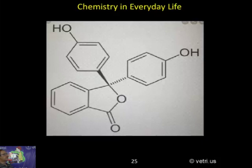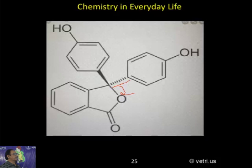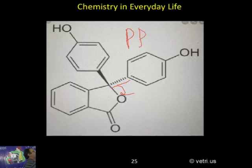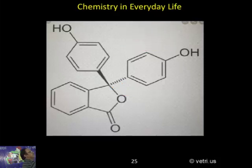Quininoid means one of the bonds will break and become a double bond — double bond for both, that is quininoid. So phenolphthalein in acidic medium is colorless, and in basic medium it is pink.